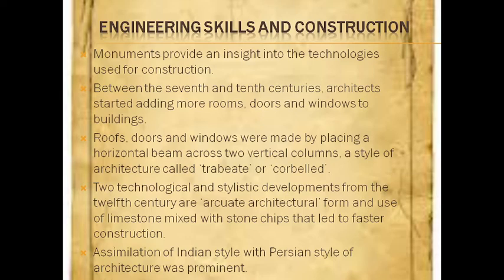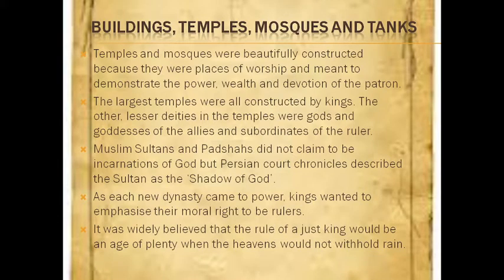Two technological and stylistic developments from the 12th century are arcuate architectural forms and the use of limestone mixed with stone chips, which led to faster construction. A combination of Indian style with Persian style of architecture was prominent. Temples and mosques are beautifully constructed because they were places of worship and meant to demonstrate the power, wealth, and devotion of the patron. The largest temples were all constructed by kings.